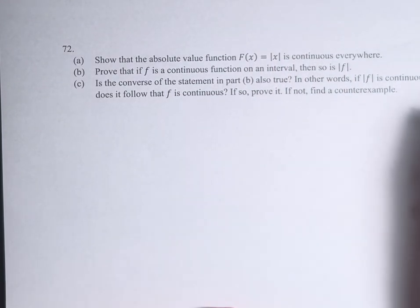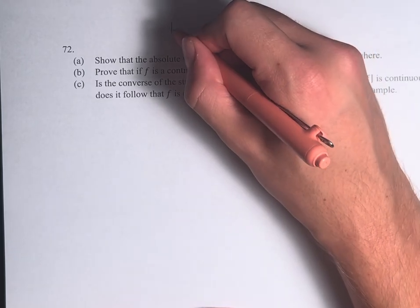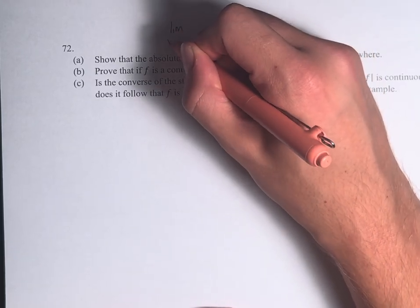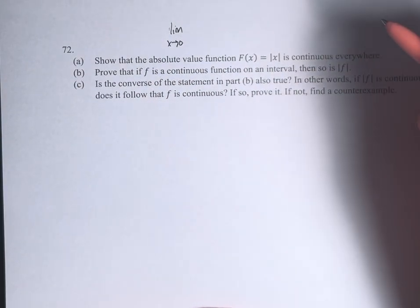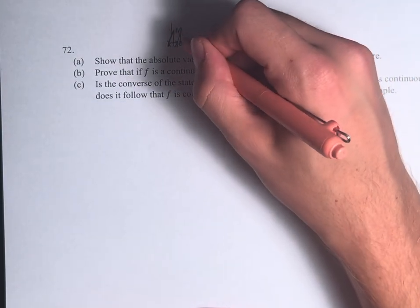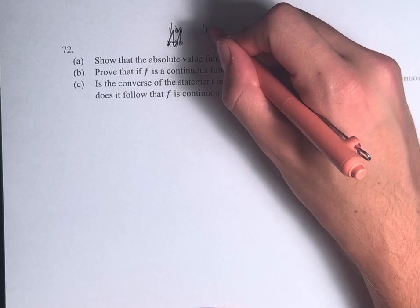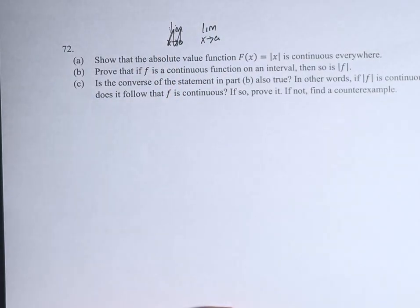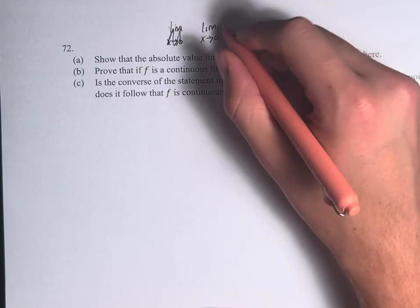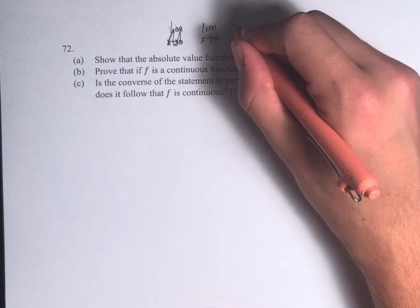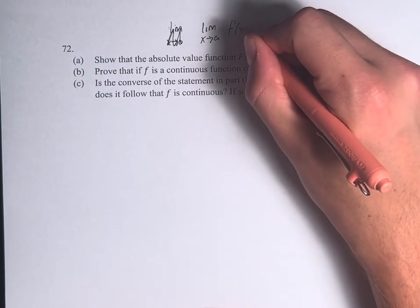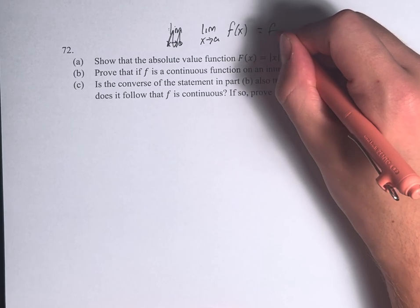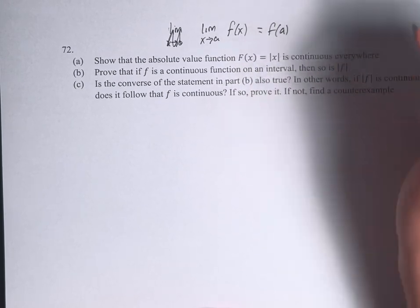To prove that a function is continuous, we have to show that the limit as x approaches a general point a of f is equal to the value of the function at that point.